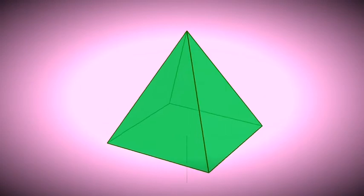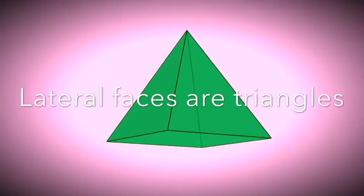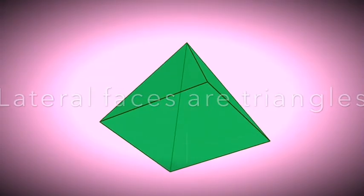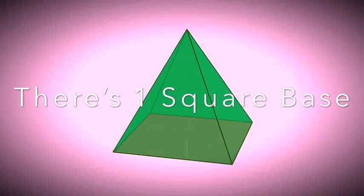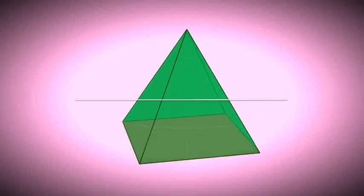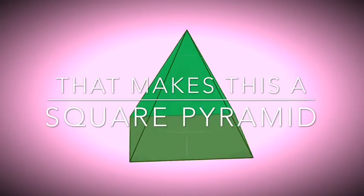In this example, you can see that the side or lateral faces are triangles. It has one square base with four triangle faces. That's what makes this a square pyramid.